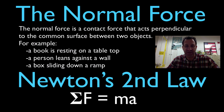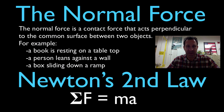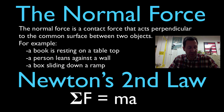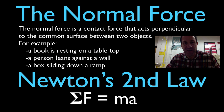So if you have a book resting on a table, the table exerts a normal force on the book. You can also have it on a vertical surface, like a person leaning against the wall. The wall exerts a normal force on the person, and also on an inclined plane, you can have a normal force exerted by the inclined plane on a box as it slides down the ramp. We're going to do this using Newton's second law — the sum of the forces is equal to mass times acceleration, commonly known as F equals ma.